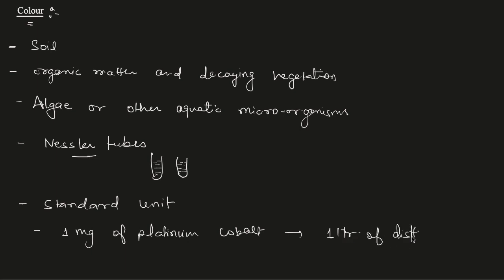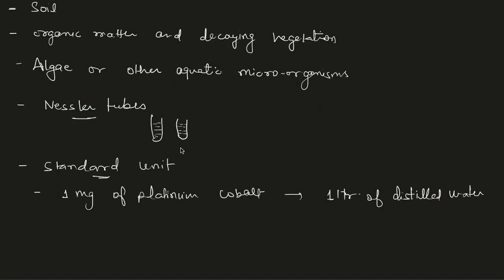In case of these Nessler tubes, we make the standard color unit. And this standard unit is made by taking one milligram of platinum cobalt and it is mixed with one liter of distilled water. So that way, a standard unit of color is made.